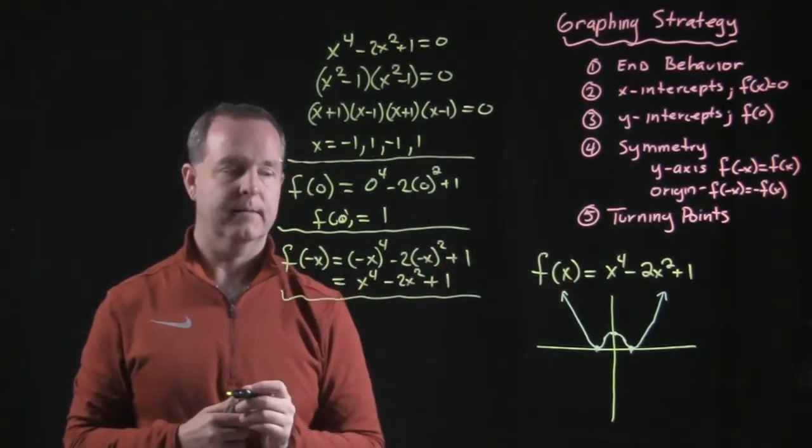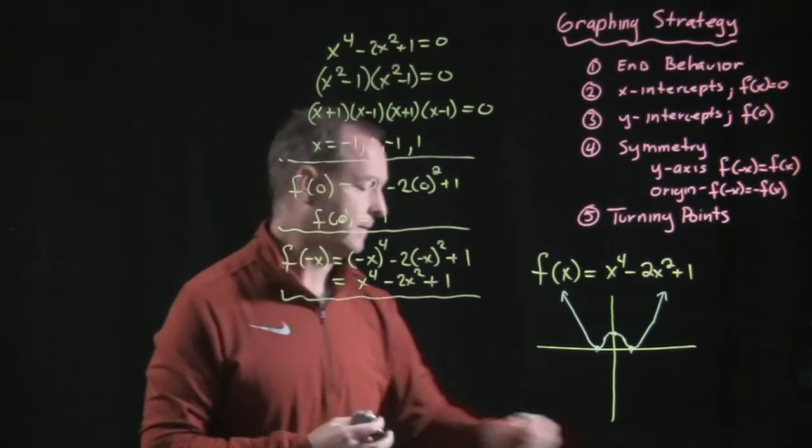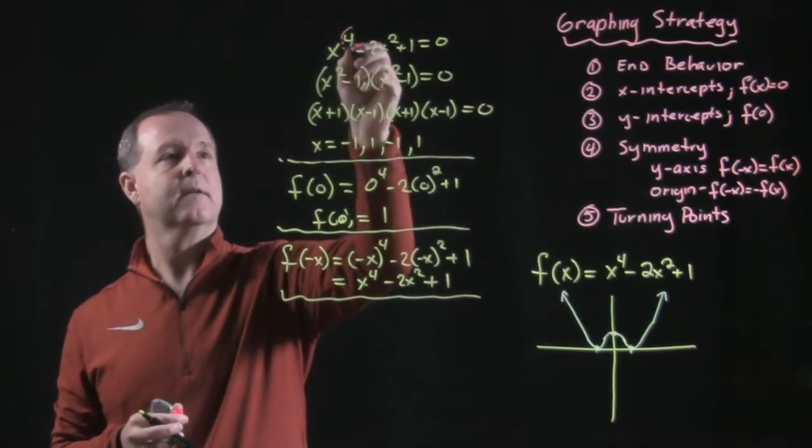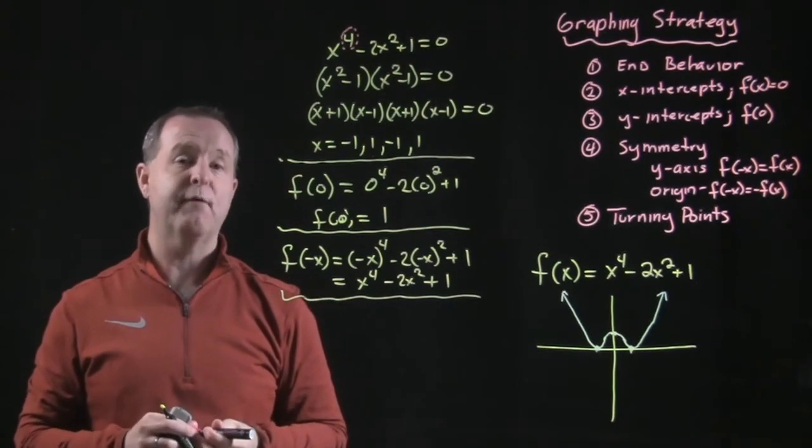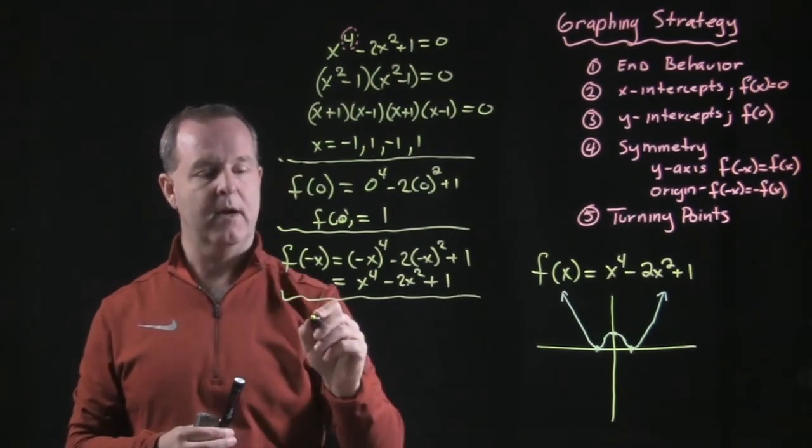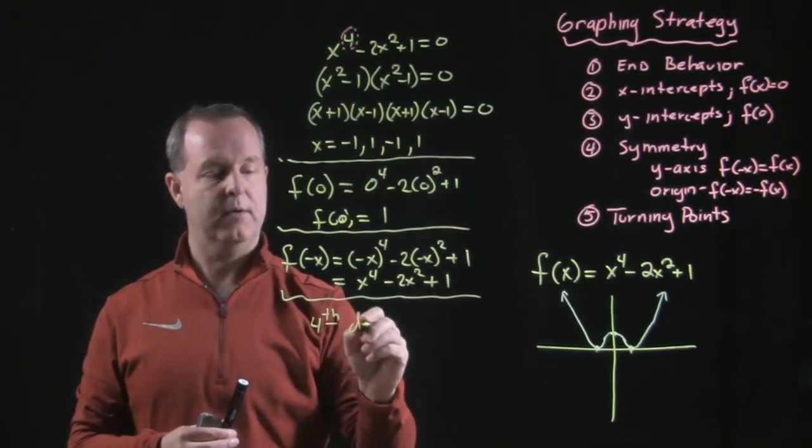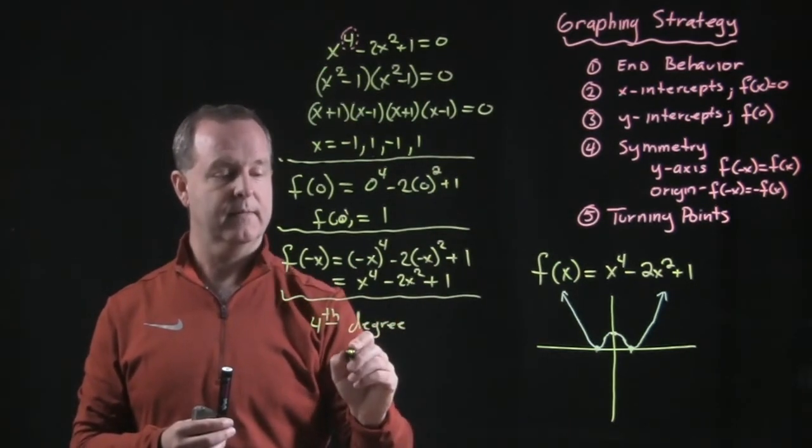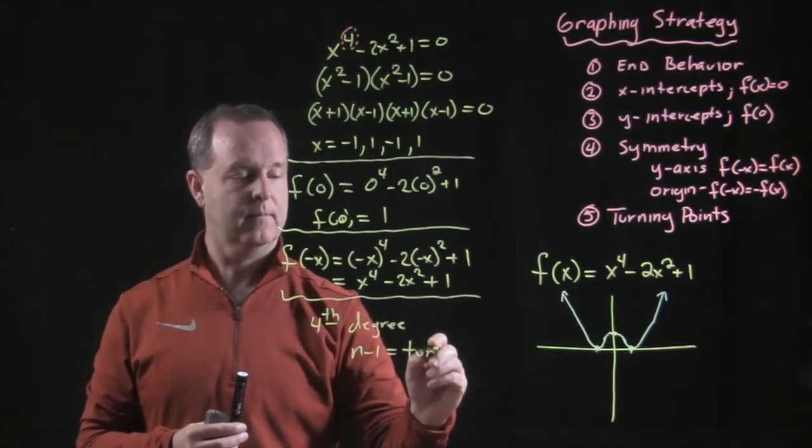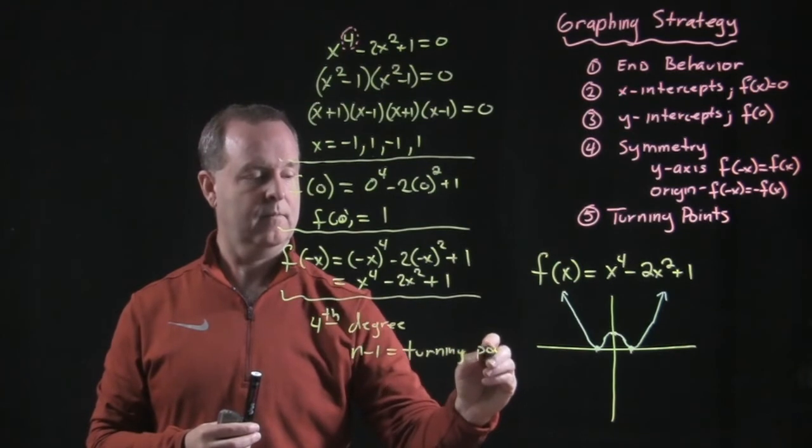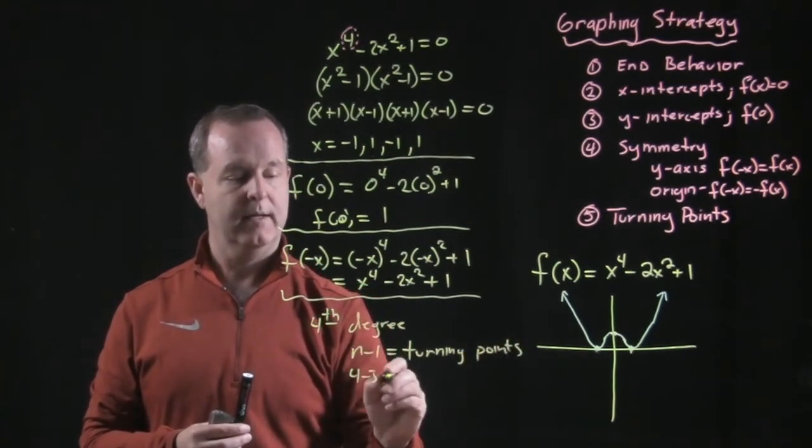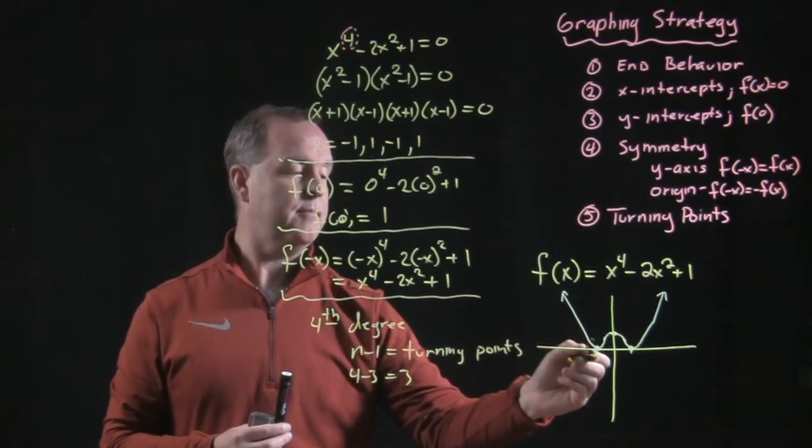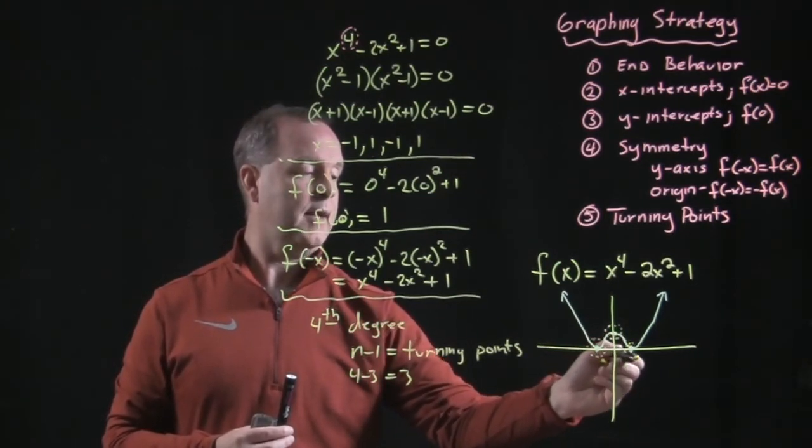And lastly, we want to look at its turning points. Turning points are identified by the index, or my highest leading index, which is a fourth. So this is a fourth-degree polynomial, which tells me, let me put that down. Fourth-degree polynomial tells me at most there are going to be n minus one turning points. So in this case, that's a four minus one equals a three. So at most, I can expect three turning points. And that's what I have. I have a turning point here, turning point here, and a turning point there.